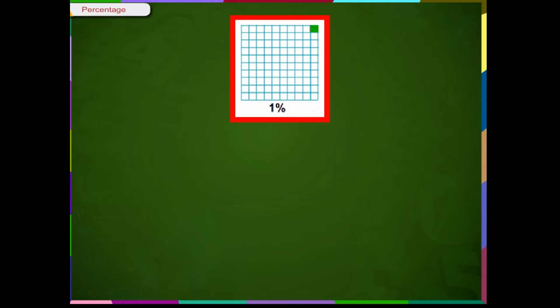Let us consider a grid of one hundred small squares. If we shade just one square green, then one square out of one hundred squares is green, or one hundredth part is green, or one percent of this grid is shaded green. One percent is written as 1% using the percent symbol, which means one per hundred.